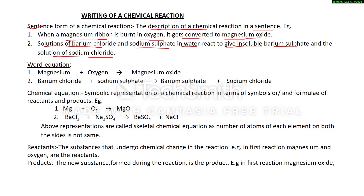Another way to write a chemical reaction is the word equation, where we write the names of the reacting substances and the substances formed. For example: magnesium + oxygen → magnesium oxide. And the second reaction: barium chloride + sodium sulfate → barium sulfate + sodium chloride. The arrow represents the change taking place.